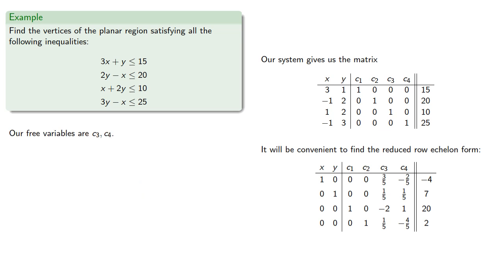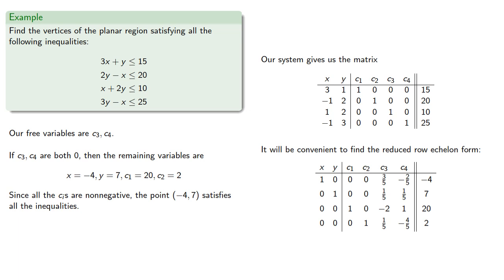Our free variables are c3 and c4. If c3 and c4 are both zero, then the remaining variables are... And since all the ci's are non-negative, the point satisfies all the inequalities, and so it's a vertex of our region.